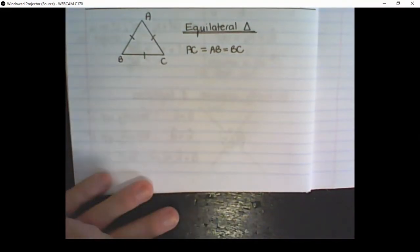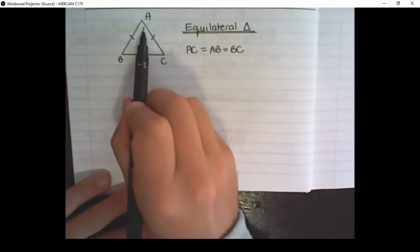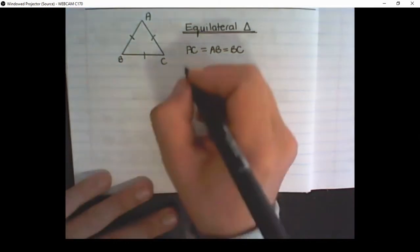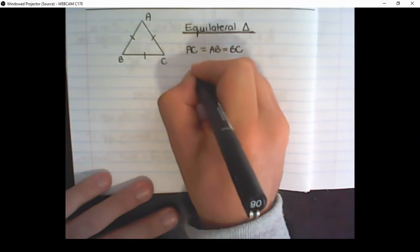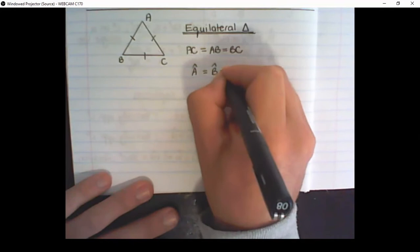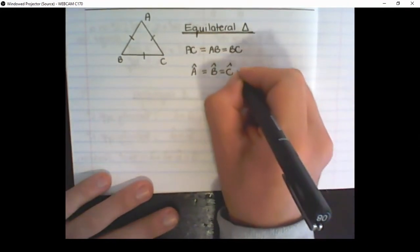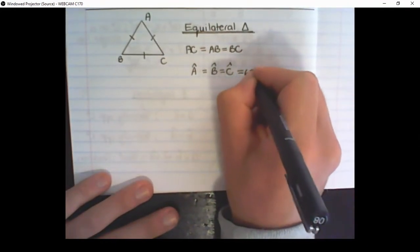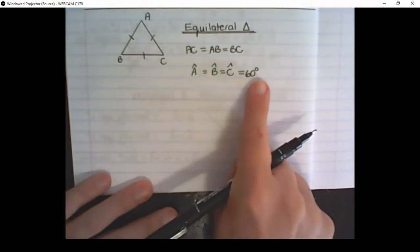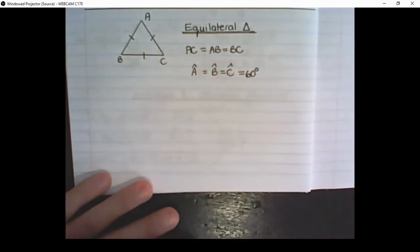Another property of an equilateral triangle is that all the angles on the inside of the triangle are equal. So I have angle A equal to angle B equal to angle C, and these all are equal to 60 degrees. We are going to discuss now why this is equal to 60 degrees.